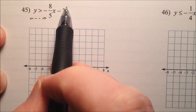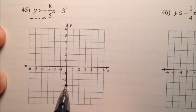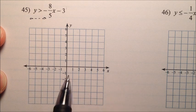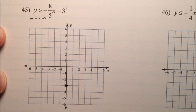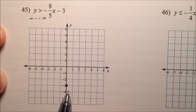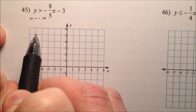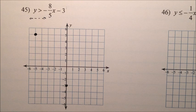So we'll start down here at the y intercept which is negative 3, and then we'll use the slope of negative 8 fifths which means we'll go down 8 and over 5. Oh that puts us way off the graph. So how about up 8 and then back 5, and that should put us right there for another point.